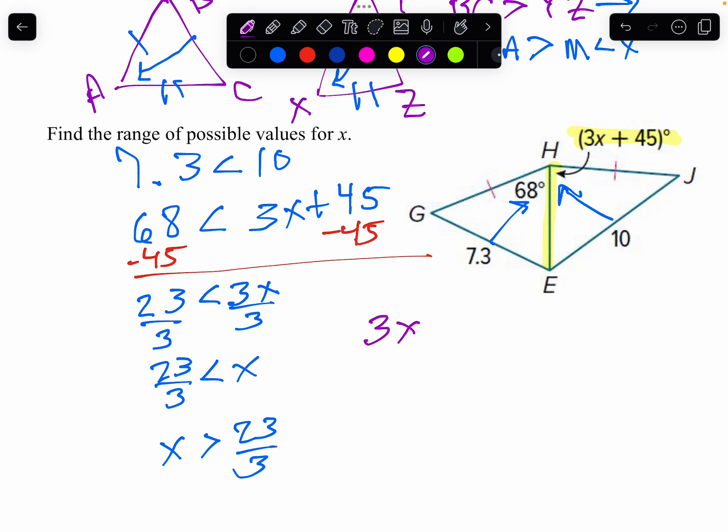I know 3X plus 45 has to be less than 180 because there's 180 degrees in a triangle. The biggest I could have is 180. Actually, it can't be 180. That's why I said less than. Well, let's solve this equation now.